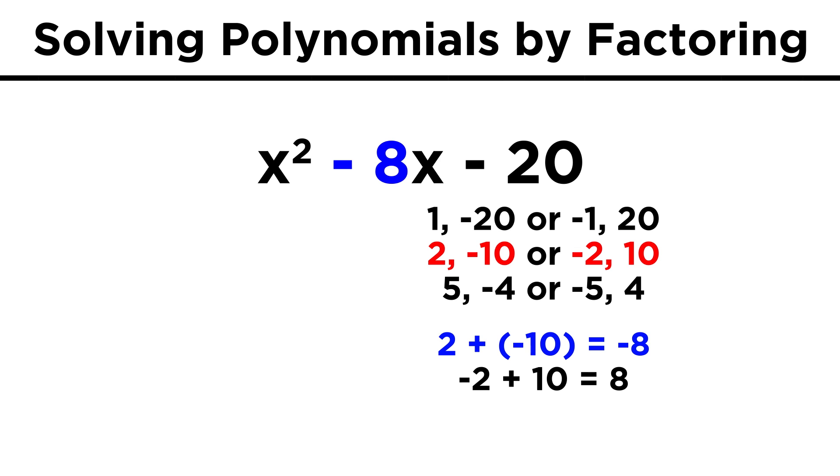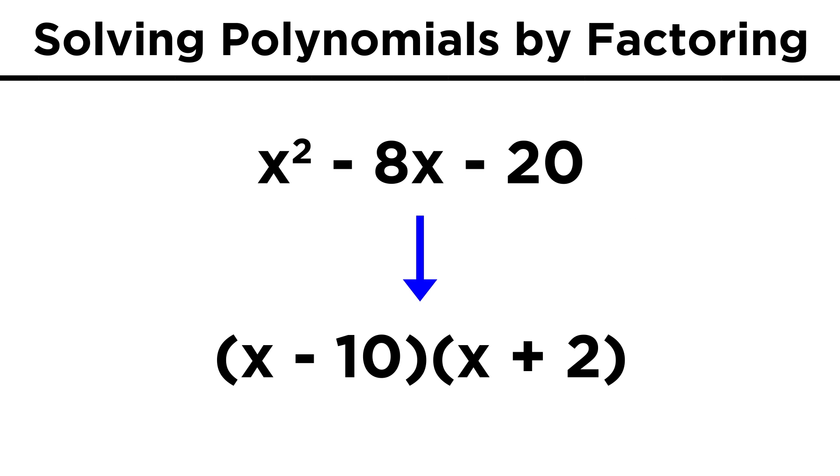But with ten and two, we could have negative ten and positive two, and that does add to negative eight. So we can write (x - 10)(x + 2), and that's the answer, which we can then FOIL if we want to check the answer.